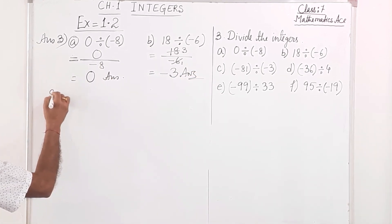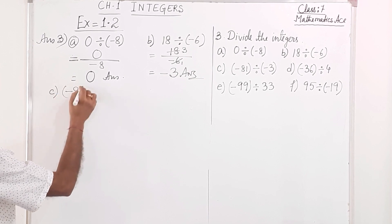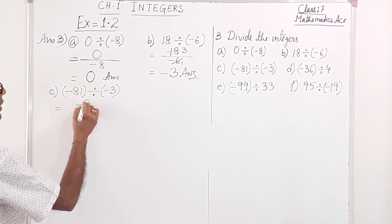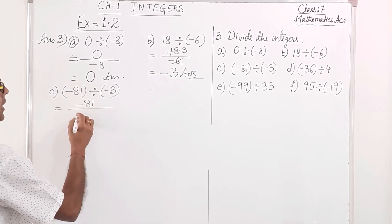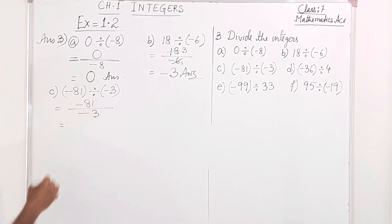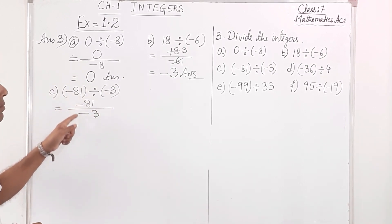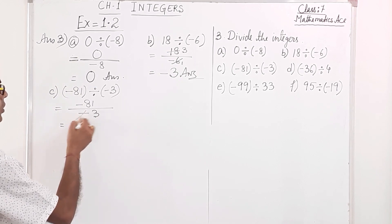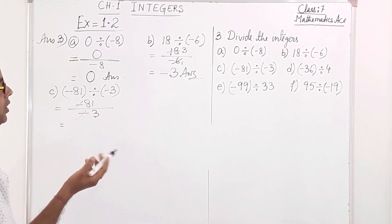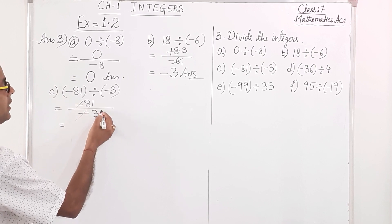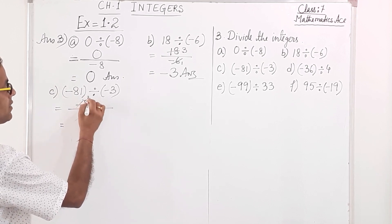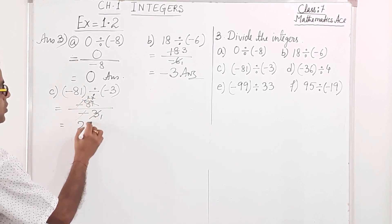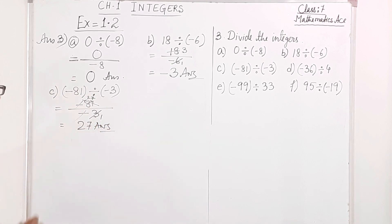Number C: minus 81 divided by minus 3. Writing it as minus 81 over minus 3 — both are same sign, negative divided by negative — so the quotient will be positive. 81 divided by 3: 3 into 27 equals 81. So the answer is positive 27.